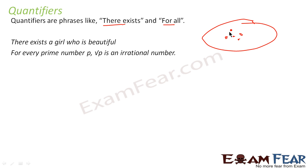For example, there exists a teacher who is tall. Let's suppose you have 10 teachers in a school — some are short, some are tall. There exists a teacher who is tall. Or there exists a teacher who has a big car. Some teachers may have a small car, some may have a big car. So when you say 'there exists,' that means from a bigger set, you have at least one teacher who has a big car, or at least one girl who is beautiful.